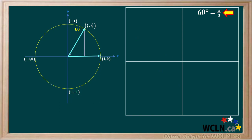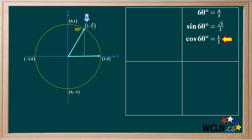Going back to our original diagram, 60 degrees is equal to pi over 3 radians. The sine of 60 degrees is y over r, which is positive root 3 over 2. Remember, for all the angles we're discussing here, r is equal to 1, the radius of the circle. The cosine of 60 degrees is x over r, which is positive 1 half. The tangent of 60 degrees is y over x, which is positive root 3 over 2 divided by 1 half, which is positive root 3 over 2 times 2, or simply positive root 3. Notice the sine, cosine, and tangent are all positive values for this angle.